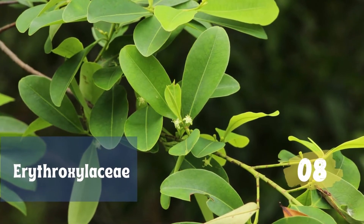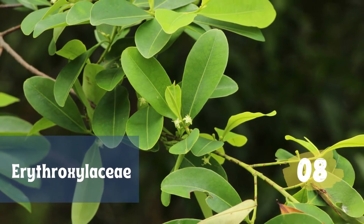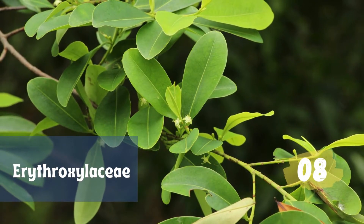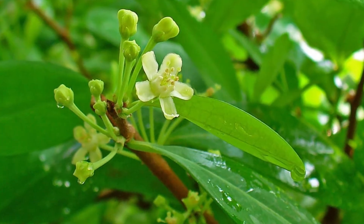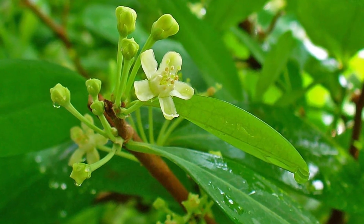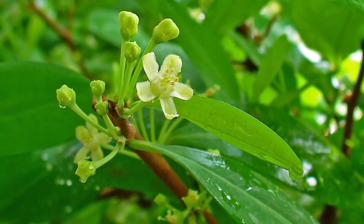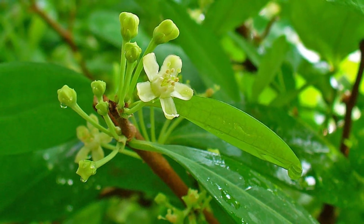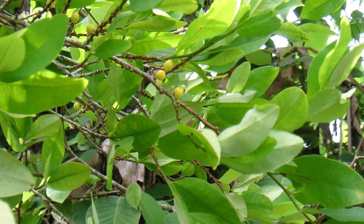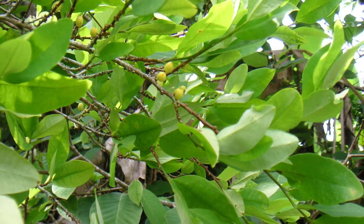Erythroxylaceae, the coca family, is a family of flowering trees and shrubs consisting of four genera and 271 species. The four genera are Aneulophus benth, Erythroxylum P. Brown, Nectaropetalum Engl., and Pinacopodium. The best known species are the coca plants, including Erythroxylum coca. Cocaine is an alkaloid extracted from the leaves of the coca bush Erythroxylum coca, which is native to the Andes. From the base paste, an intermediate in the extraction process, it is possible to refine powder cocaine hydrochloride, solid crack, and paste products.